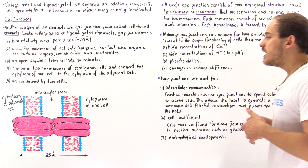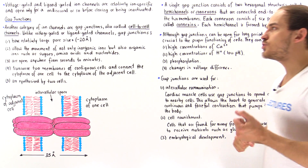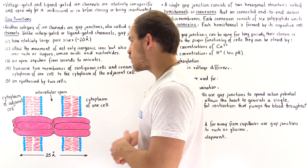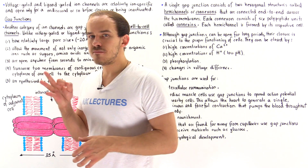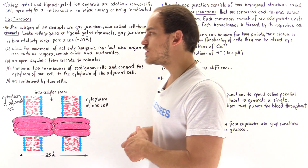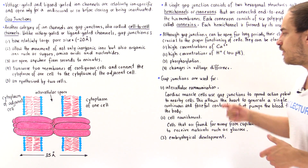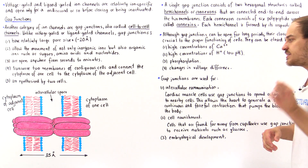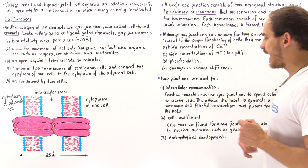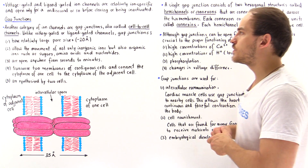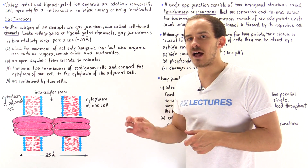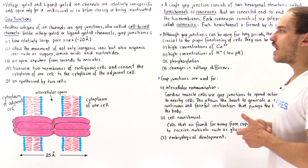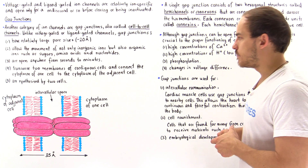Now let's move on to the functionality of gap junctions. There are three important functions: function number one is intercellular communication; function number two is cell nourishment; and function number three is embryological development.